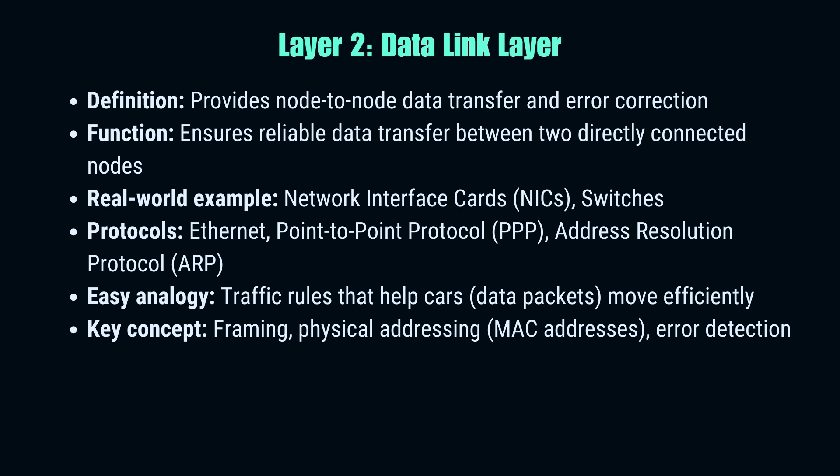Moving up, we reach the data link layer. If the physical layer is about moving raw bits, the data link layer ensures those bits are transmitted reliably between two directly connected nodes. It's responsible for framing data into manageable chunks and uses MAC addresses for physical addressing. This layer is where your network interface card (NIC) operates, and where network switches do their work. Protocols like Ethernet and the Address Resolution Protocol (ARP) function here. The data link layer also handles error detection, making sure data hasn't been corrupted in transit.